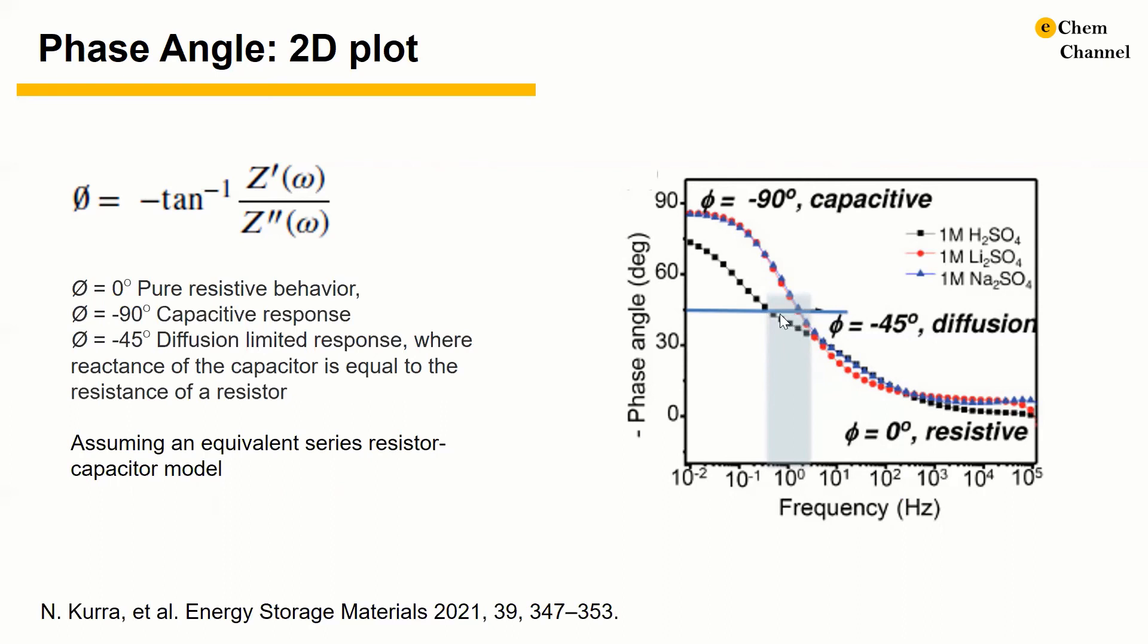However, in the neutral aqueous electrolyte, there should be no charge transfer across the MXene surface, and the crossover frequency was five times higher compared to that in the acidic electrolyte. It is worth mentioning that the crossover frequencies may vary depending on the thickness and the electrode architectures in the given electrolyte.